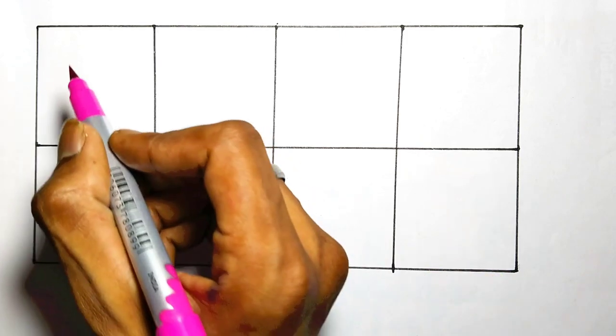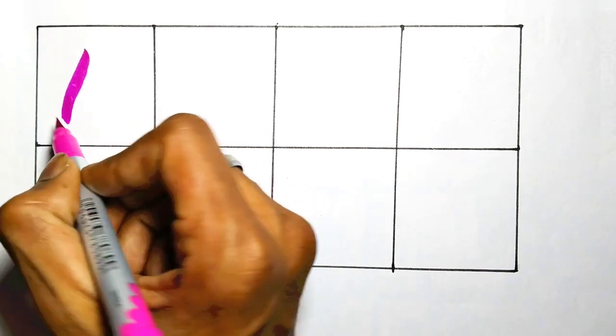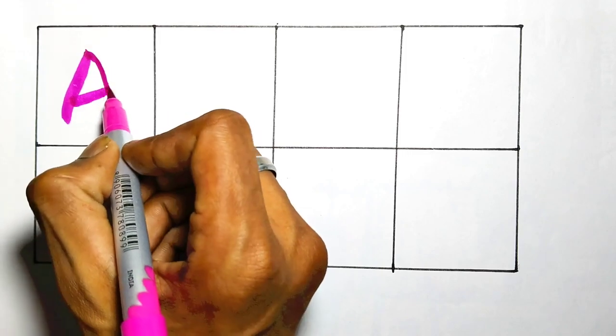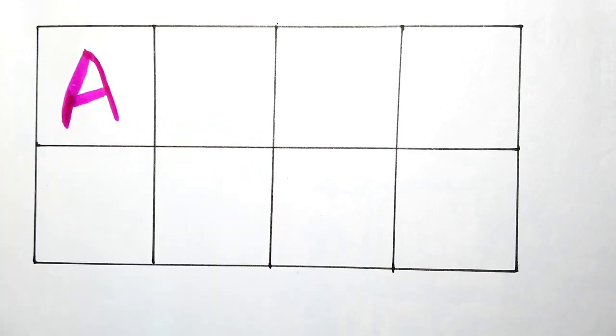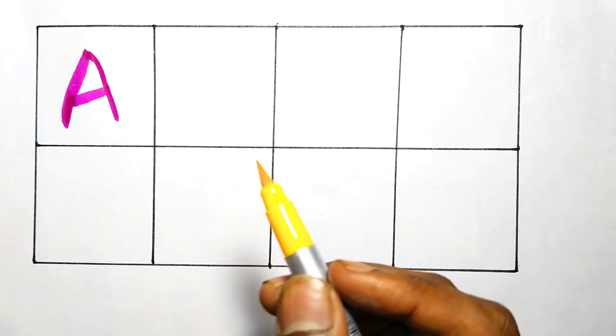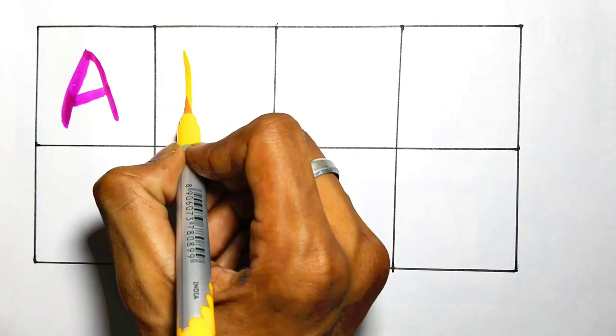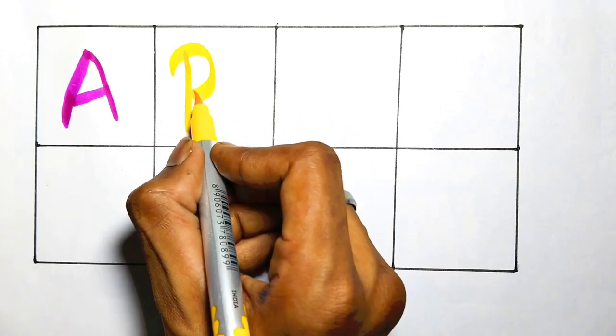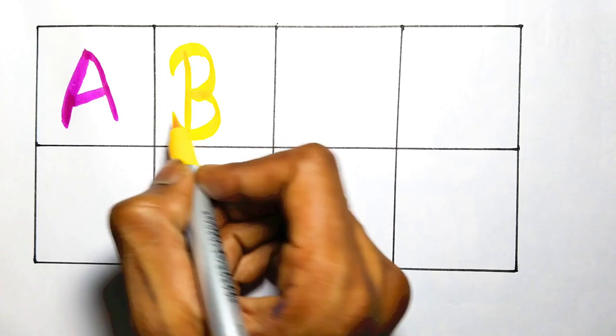Pink color, A, A for apple. Yellow color, B, B for ball. B, B for ball.